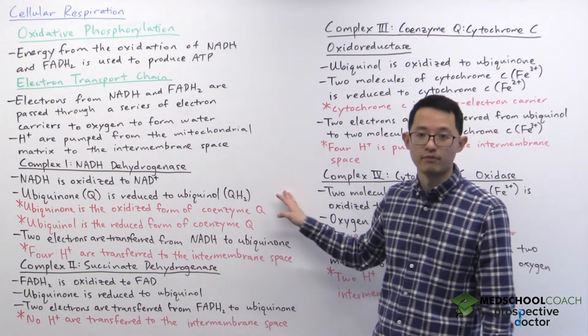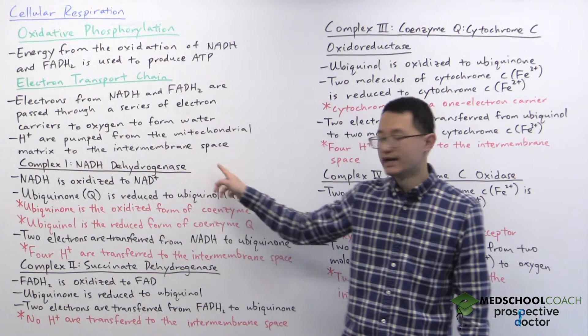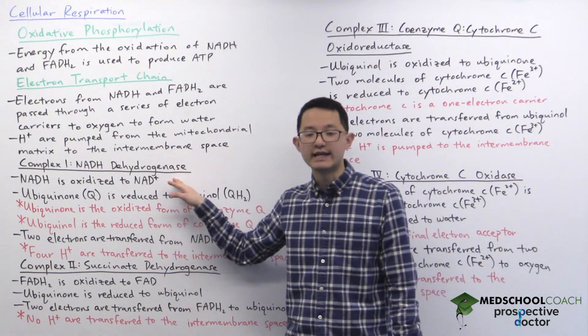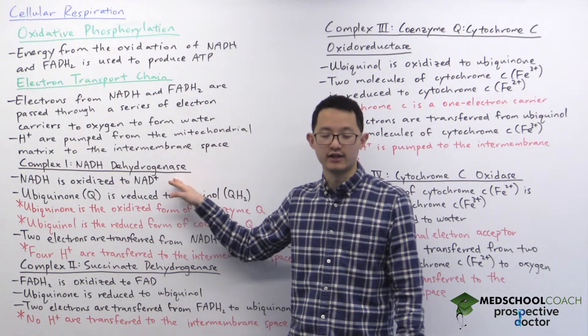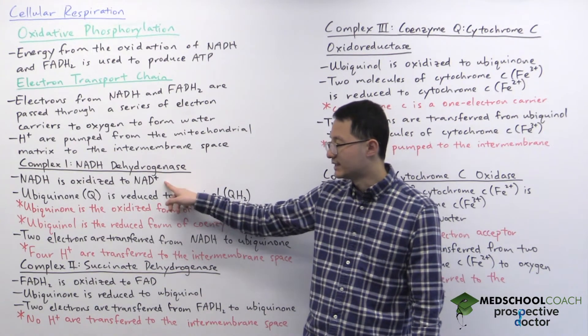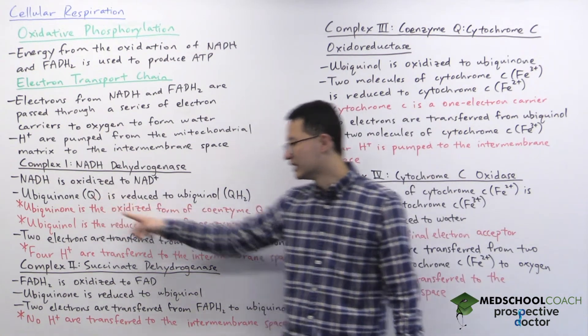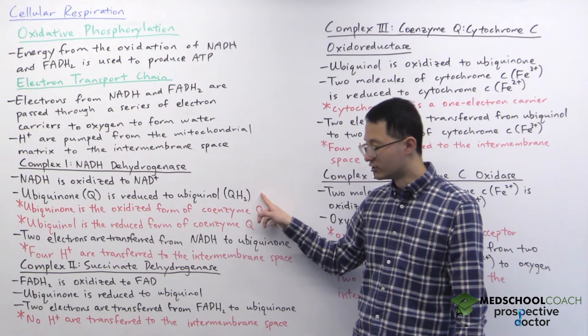Let's now go through the complexes one by one. Complex 1 is NADH dehydrogenase. As I mentioned, this is where NADH enters the electron transport chain. So it will oxidize NADH to NAD+, and it will take the electrons and give them to ubiquinone and reduce it to ubiquinol.